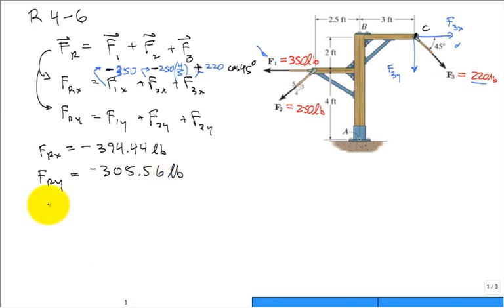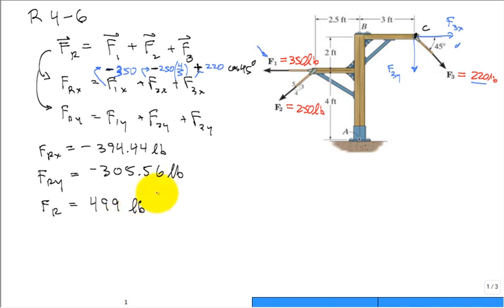If the problem asks for the magnitude of the resultant force, you square both components, add them, and take the square root. The resultant magnitude comes out to 499 pounds. That would be the boxed answer for that part.